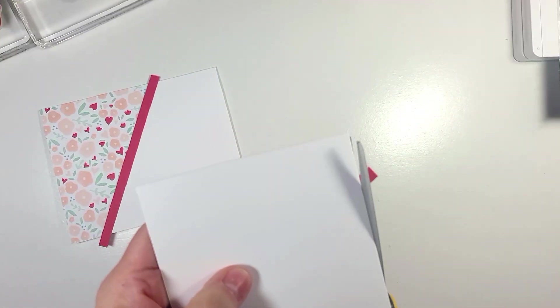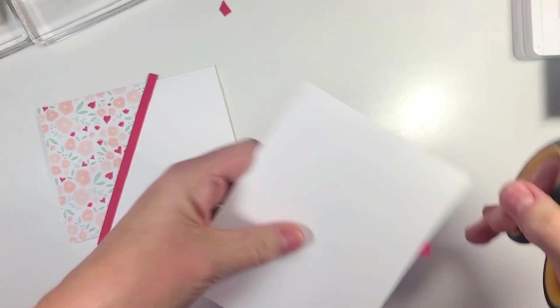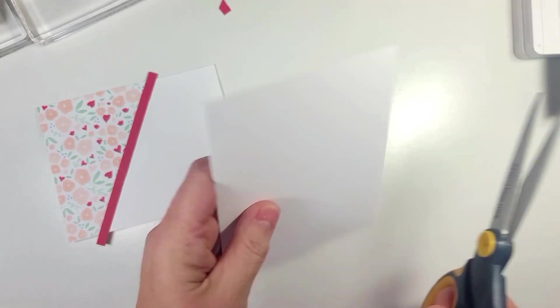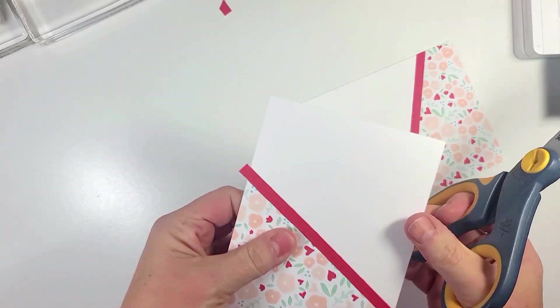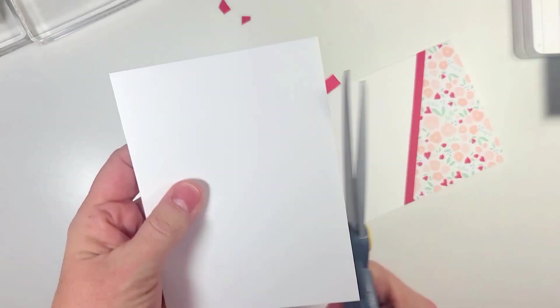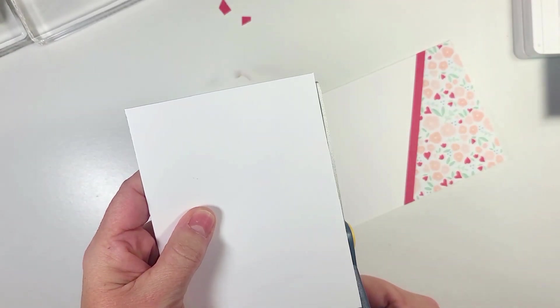Next we're going to come in with our scissors and we're just going to cut the edges off. To do that really quick, you just flip the card over and give it a good snip like that.